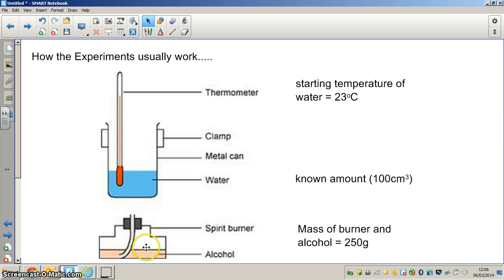Underneath this we have a spirit burner with a fuel in, and in this case I have just called it alcohol, but it could be any form of fuel. Important things in doing this experiment is that we measure the starting temperature of the water, we measure the mass of the burner and the alcohol to start with, and we know the volume of water. We set the apparatus up as shown, we set fire to the wick of the spirit burner and this will warm the water up, and we let the experiment go for a predetermined time or for a predetermined rise in temperature of the water.